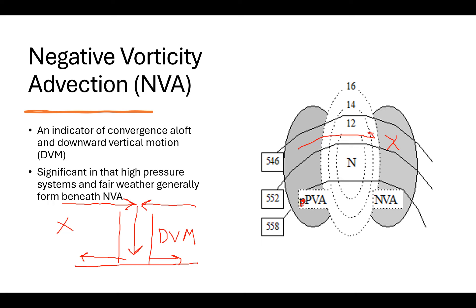The winds are going to blow parallel to these solid dark height contour lines because there's no friction at 18,000 feet or 500 millibars. Let's say your value for vorticity is 18 at point X. As this wind blows parallel to these height contours, it's going to send lower values — this 12 is going to be moving into the area that currently has a vorticity value of 18. So vorticity values are decreasing over time — going from 18 to 16, 14, and then 12. This is a great example of NVA ahead of a vorticity minimum — sending lower vorticity values toward a location.